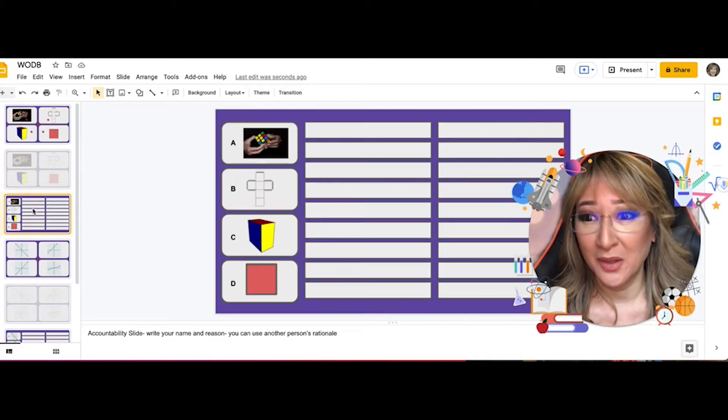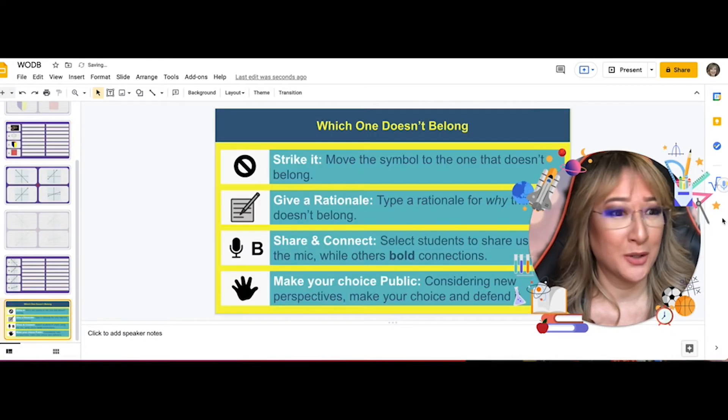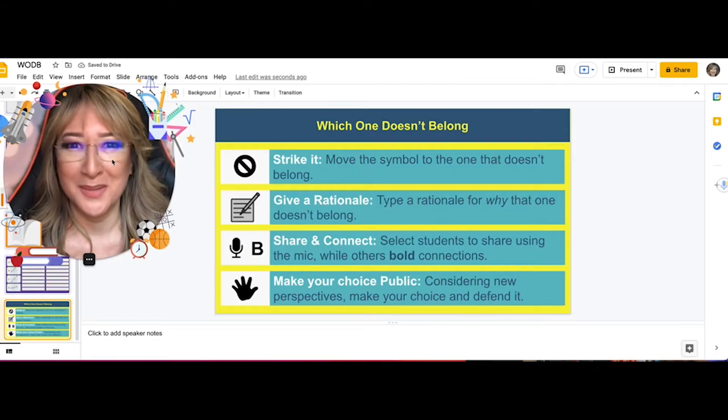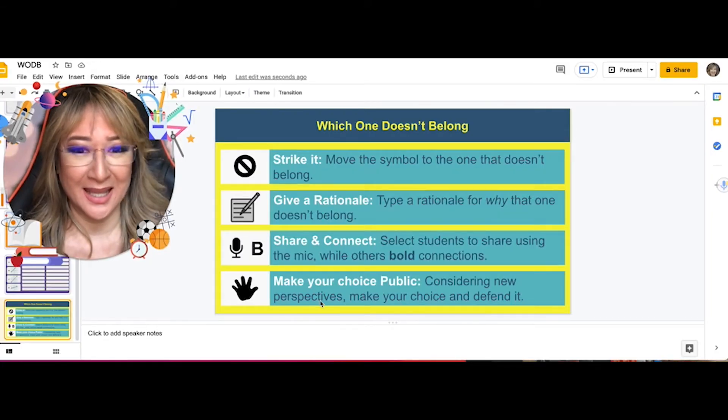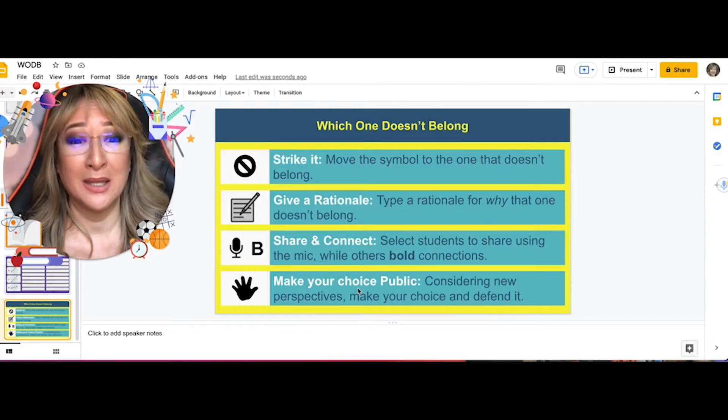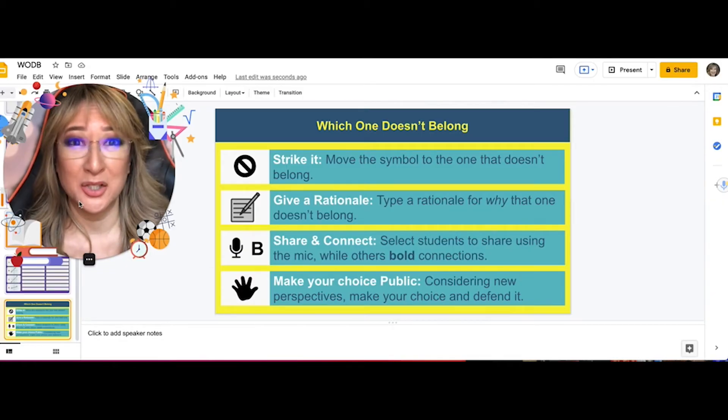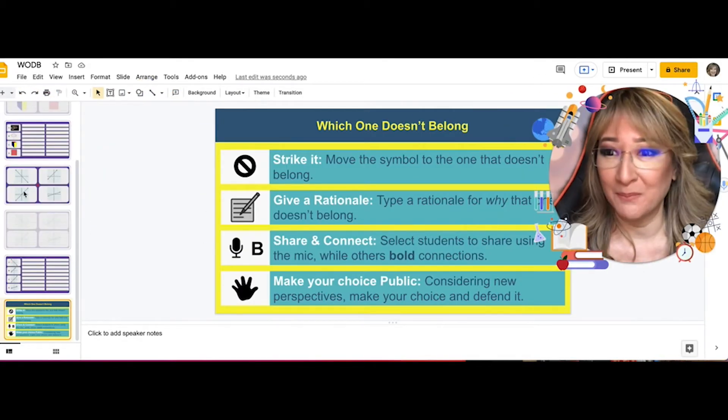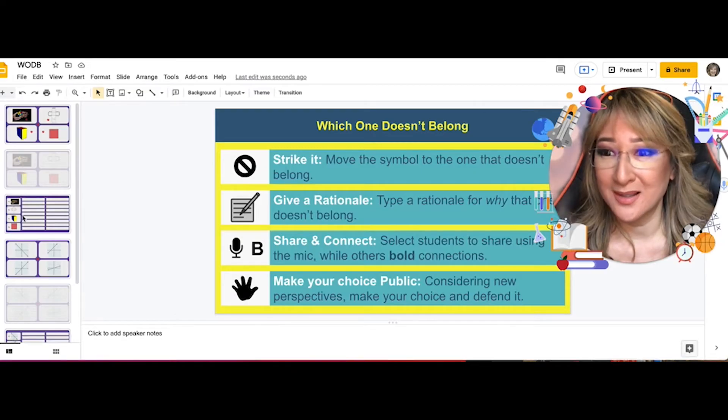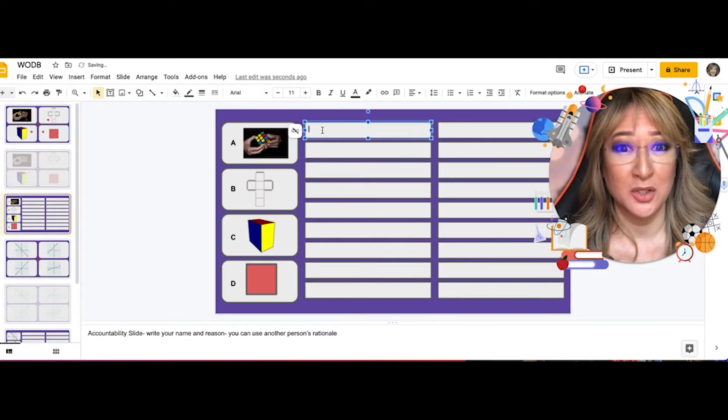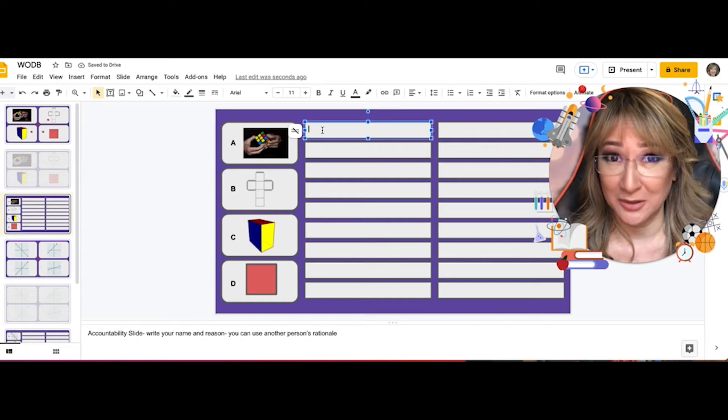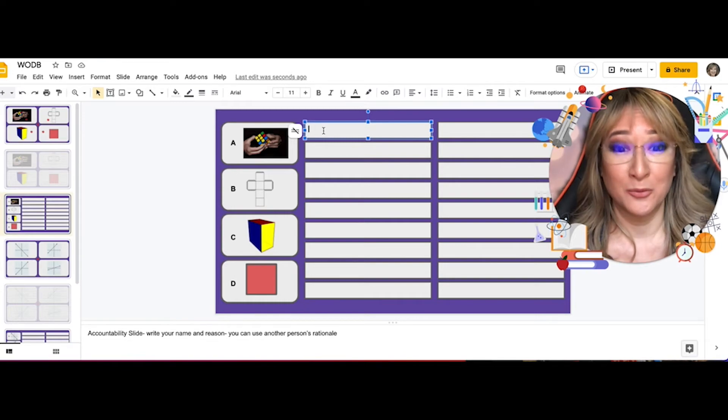I said to the faculty, if there is a rationale on this slide that you like, bold it or highlight it or color it in some way, or you can even insert a little star or a little circle to vote that you really like that rationale. And then the third slide is the accountability slide. It's the accountability slide where you make your choice public. You can consider new perspectives, someone else's rationale, or you can actually stick to your own and defend it.